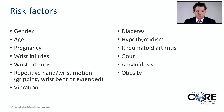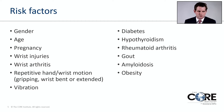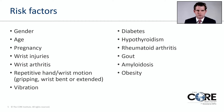Some of these risk factors include female gender, increasing age, pregnancy, certain wrist injuries or wrist fractures, wrist arthritis, repetitive hand or wrist motion such as repetitive gripping, wrist bending or extending, and exposure to vibration such as from certain power tools. Certain medical conditions also put us at risk, including diabetes, hypothyroidism, rheumatoid arthritis, gout, amyloidosis, and obesity.